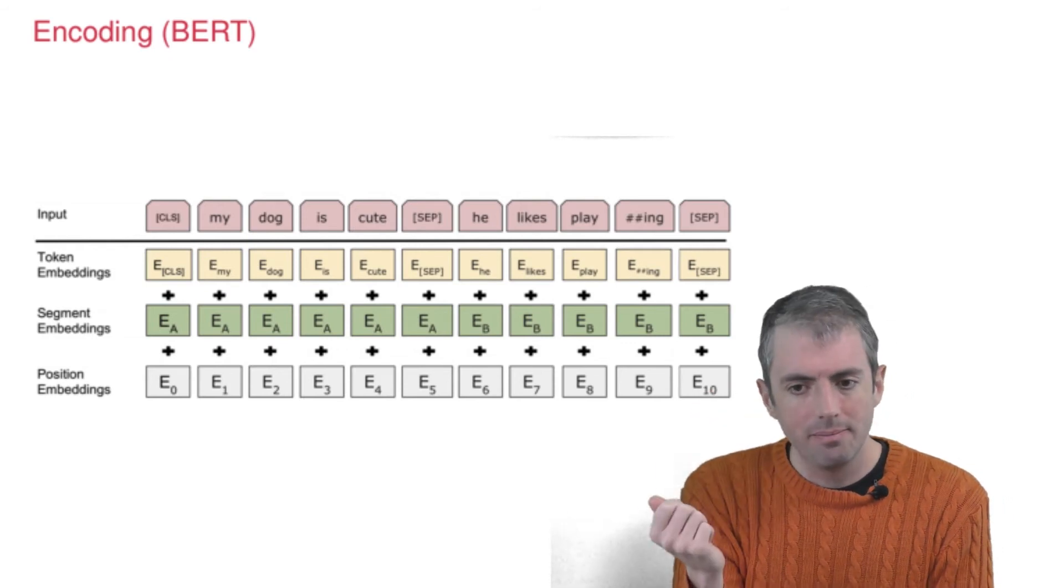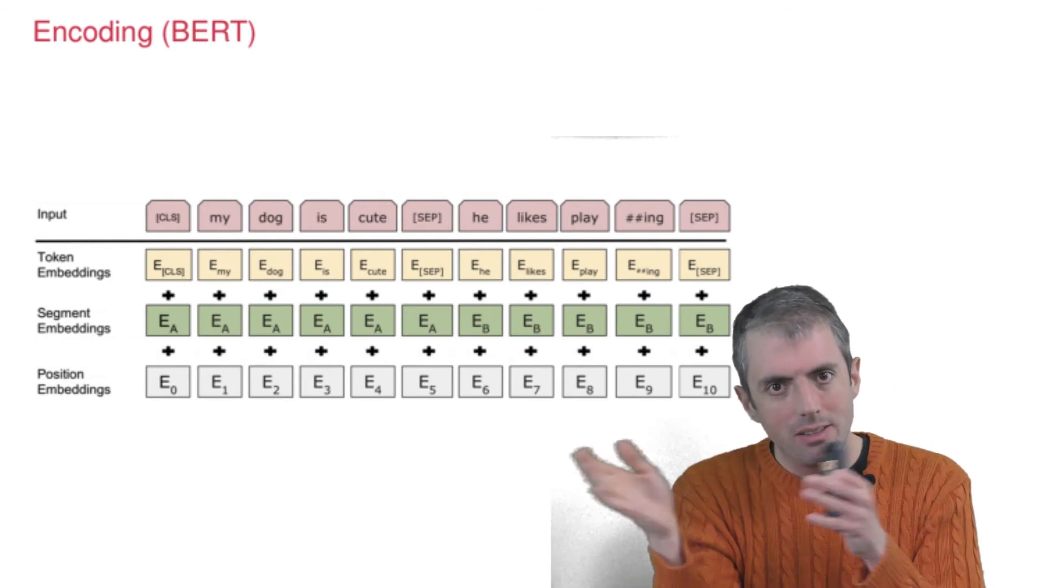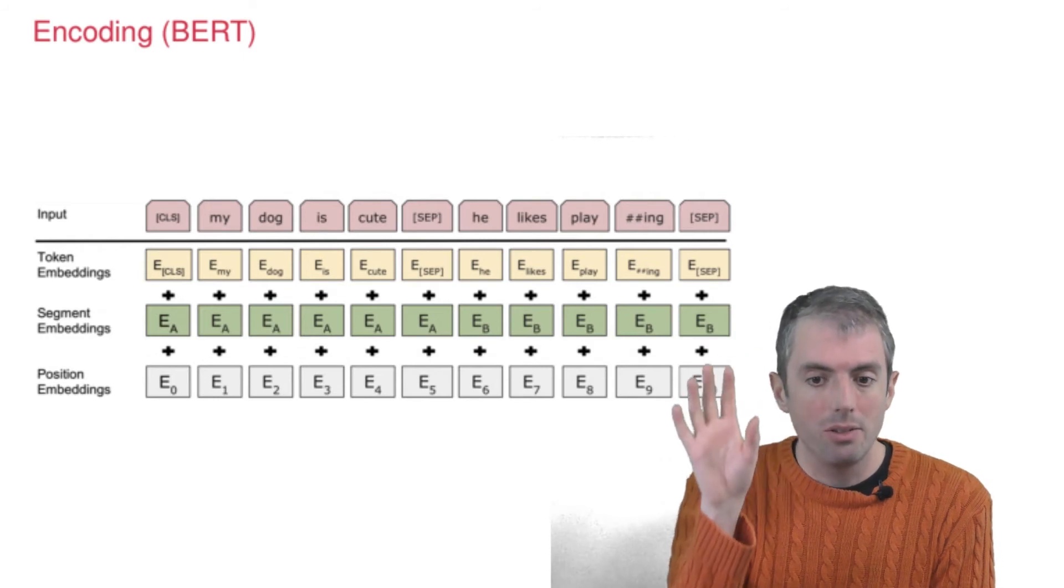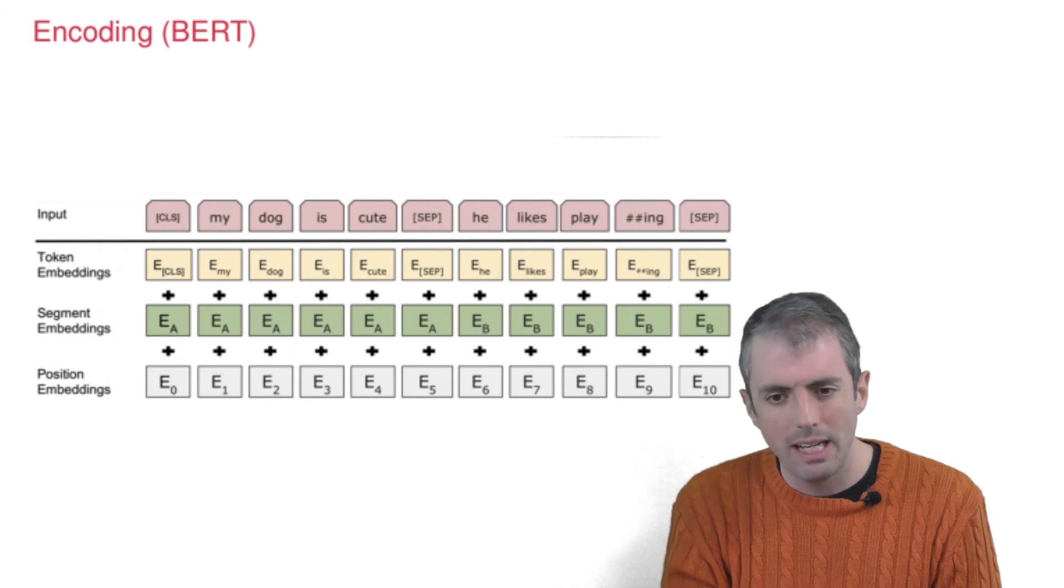So instead of 'playing,' you have 'play' and 'ing' split into different word parts. You have, as usual, embeddings for each of the tokens. And so this is the same thing that we had from Word2Vec, nothing new there.